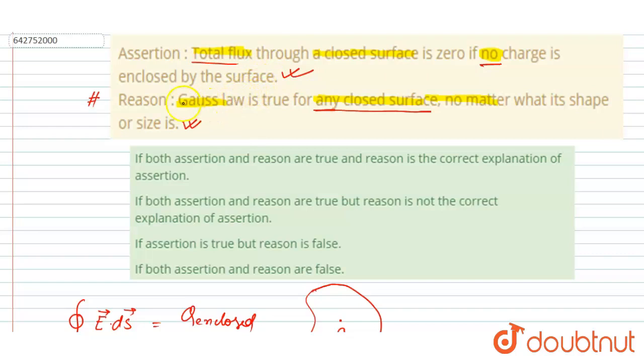statement and assertion are true here, but reason is not a correct explanation for the assertion. So B will be the correct answer. Thank you.